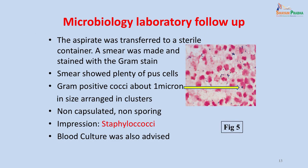The aspirate transferred to the laboratory was placed in a sterile container. A smear was made from the aspirate and stained with Gram stain, which showed plenty of pus cells and gram-positive cocci arranged in clusters. The gram-positive cocci were 1 micron in size, non-capsulated and non-sporing. The smear impression was that the infecting organism was staphylococci. A blood culture was also advised considering the severity of infection, to rule out bacteremia or septicemia.